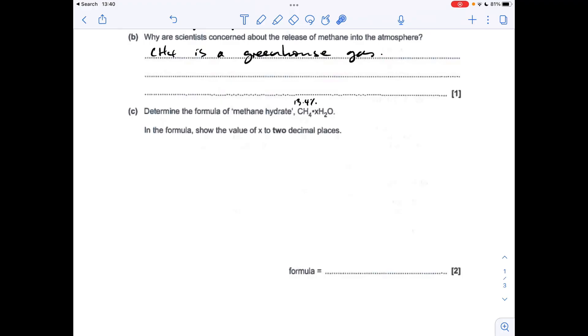Part C. We've got to determine the formula of methane hydrate and unusually we've got to give x to two decimal places. Normally it is to the nearest whole number but we've got to bear this in mind. We were told at the top of the question it's 13.4 percent methane, so obviously that from 100 is going to be the H2O percentage. It's a straightforward empirical formula calculation, so we've got the two percentages dividing by the MR of methane and H2O. We've got our moles here to at least three significant figures. Divide by the smallest to get the ratio, so it's 1 to 5.74, so obviously that's the answer that they want.